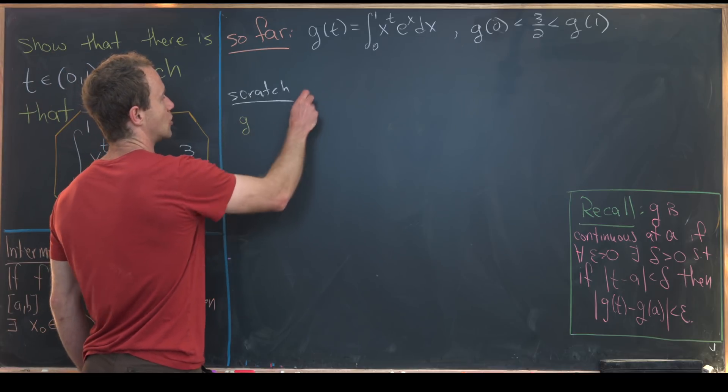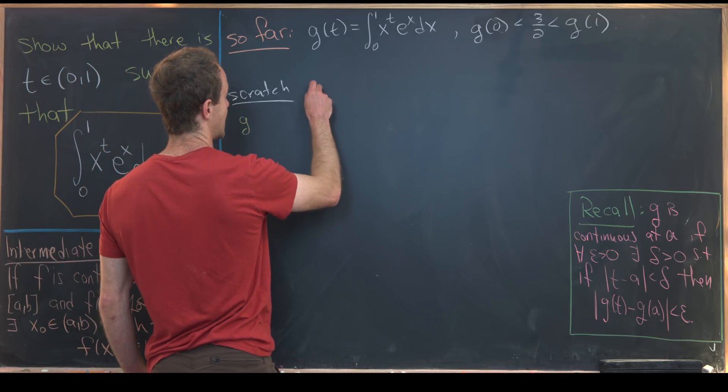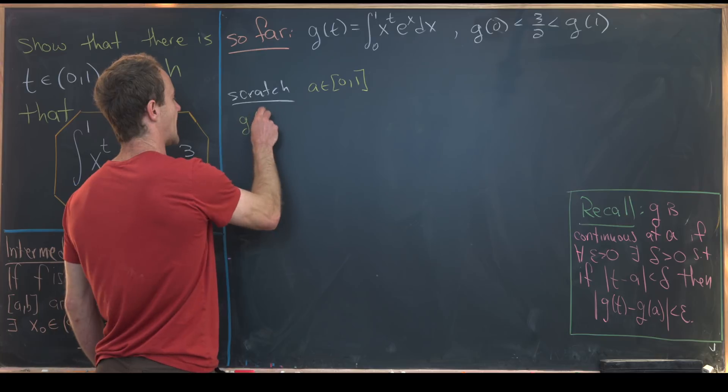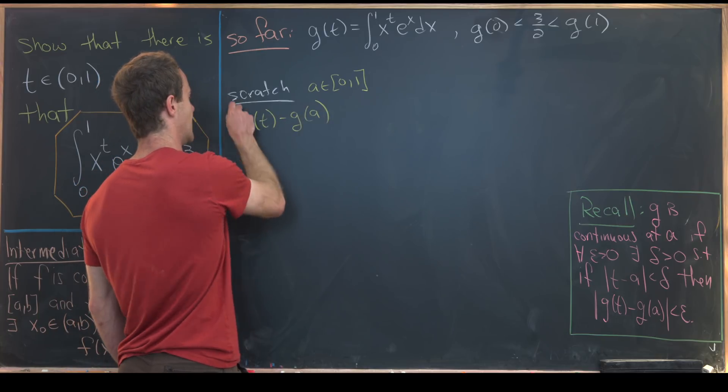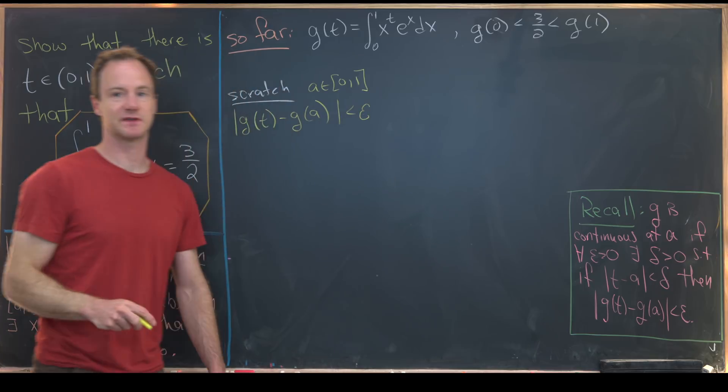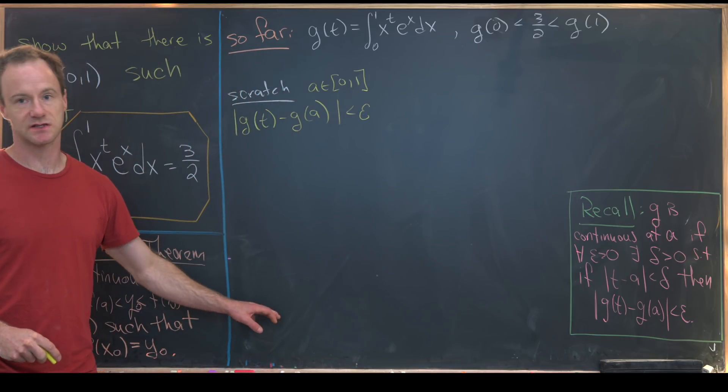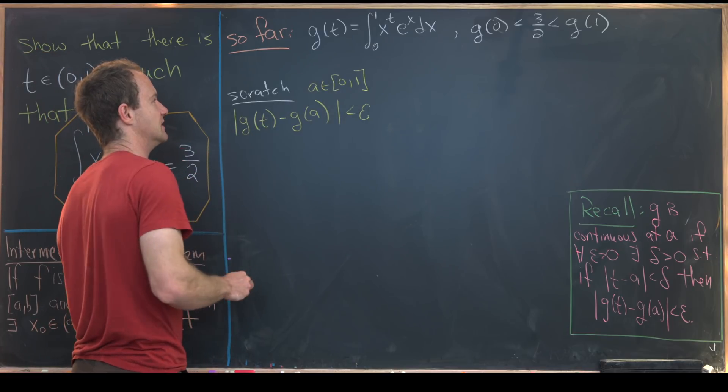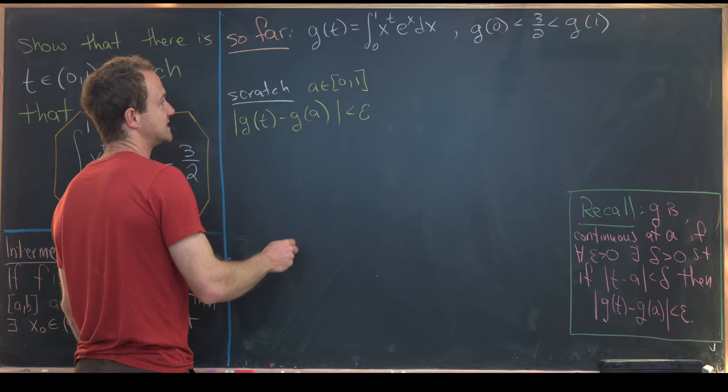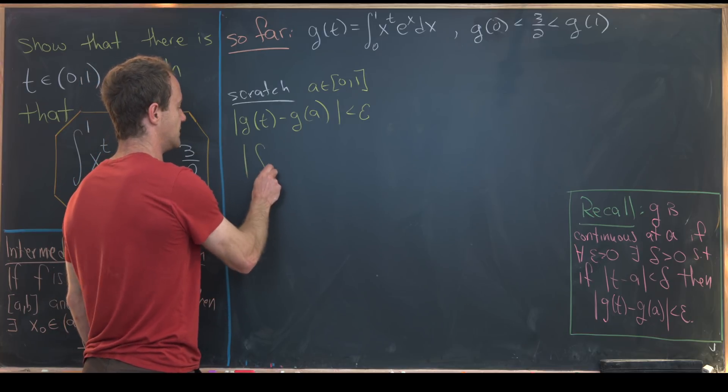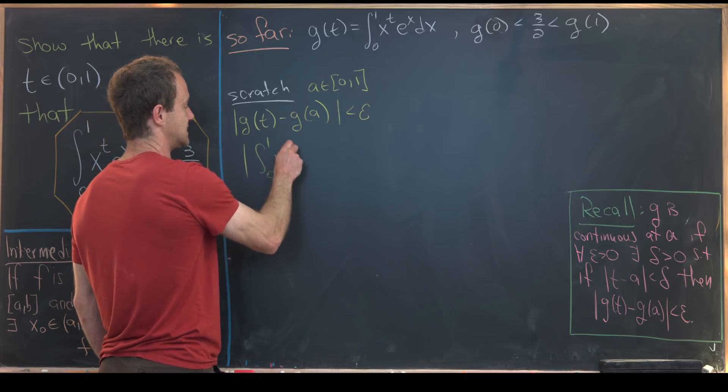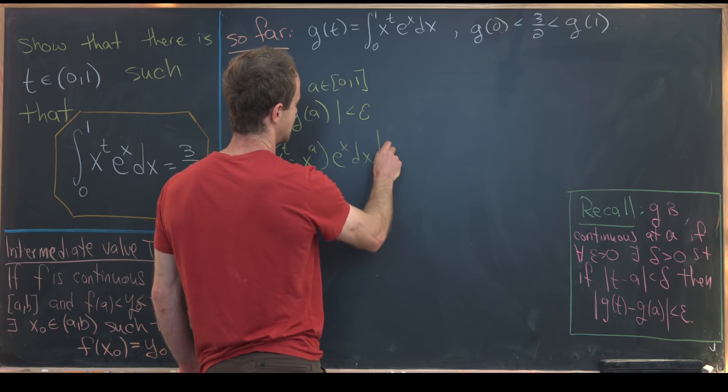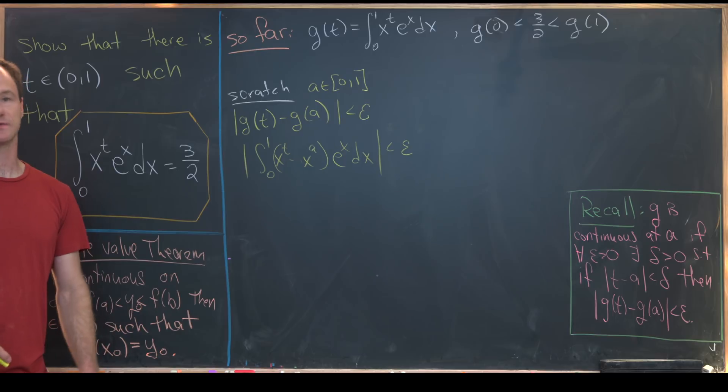So like I said, our goal is to take a from the set zero one and then look at g of t minus g of a in absolute values and make that less than epsilon. So we want to construct some delta way down here so that will make this true. But just putting in the definition of g here, we see that that means that the integral from zero to one of x to the t minus x to the a times e to the x dx must be less than epsilon, where all of that's in absolute values.